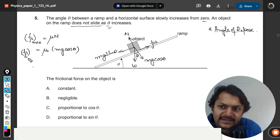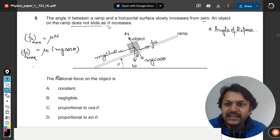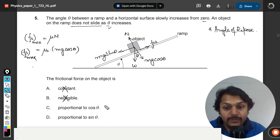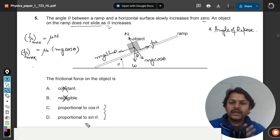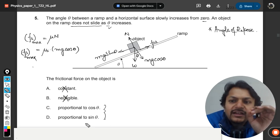So we can very well say that the frictional force of an object is, so the frictional force will not be constant, it will not be negligible, whether it will be proportional to sine theta or cos theta. My students try to understand this, we can clearly see that the friction is directly proportional to cos theta.